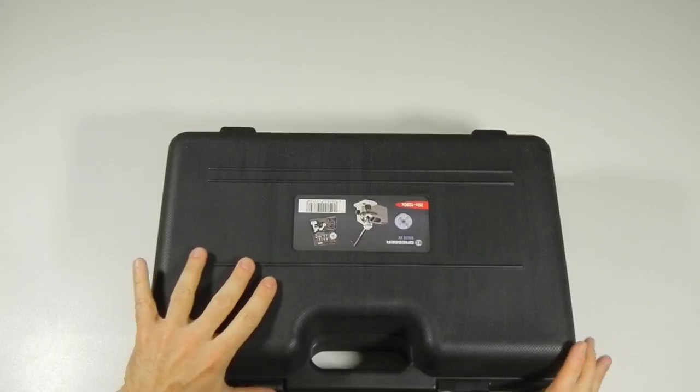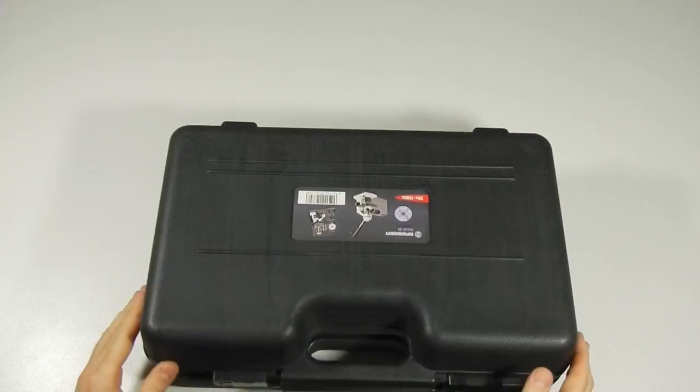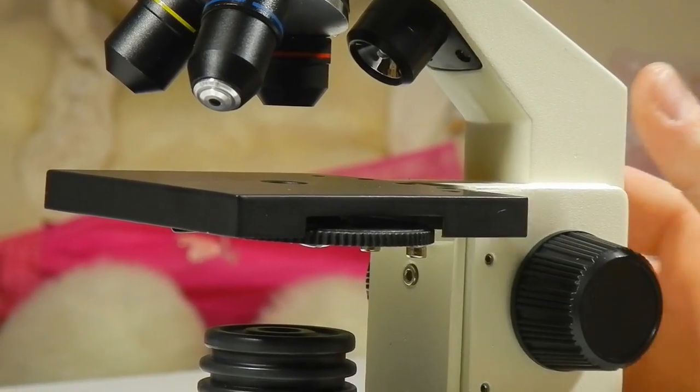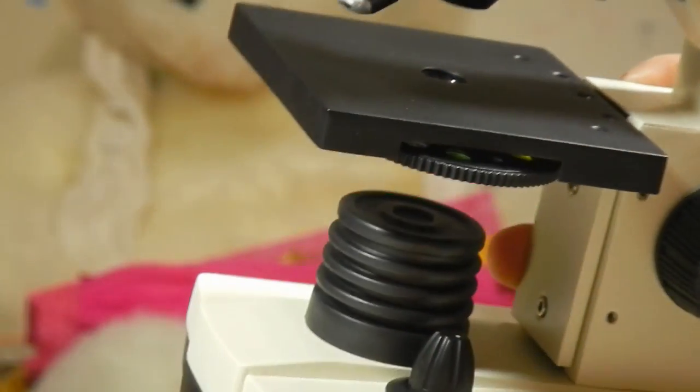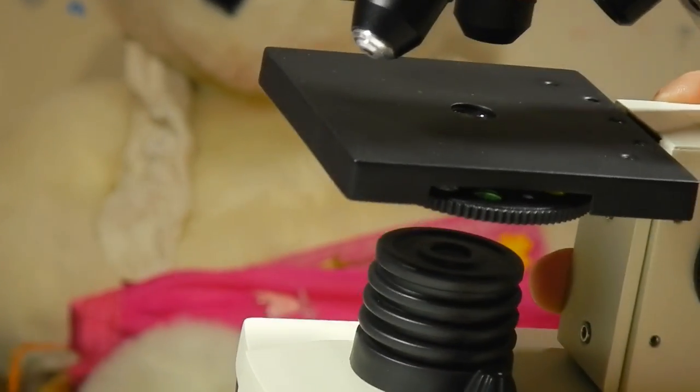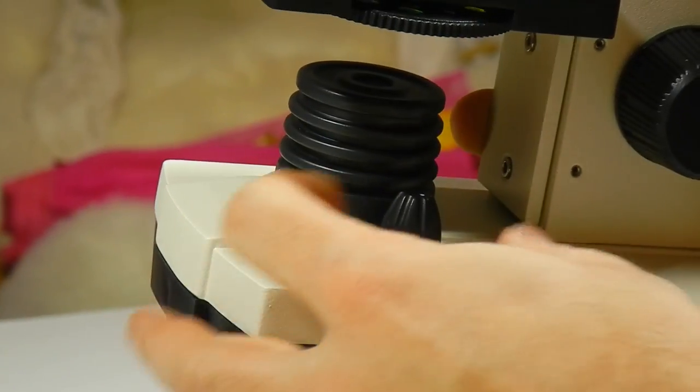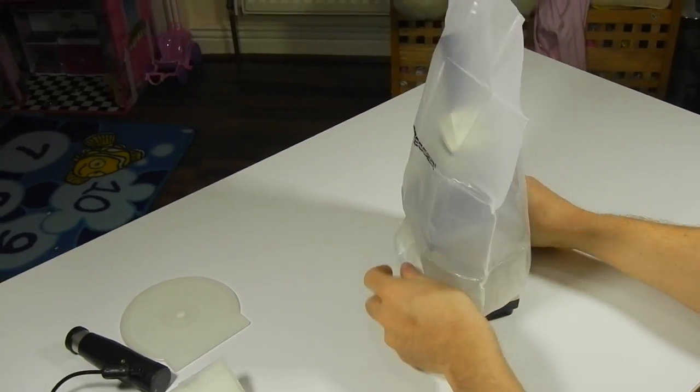The plastic case seems to be well-made and these are the items that are hidden inside. The main body of the microscope, solid made of steel and some plastic parts, a plastic cover bag for the instrument.